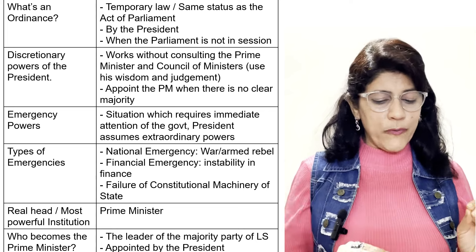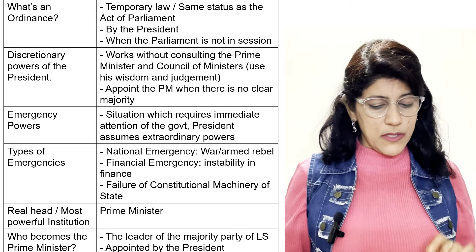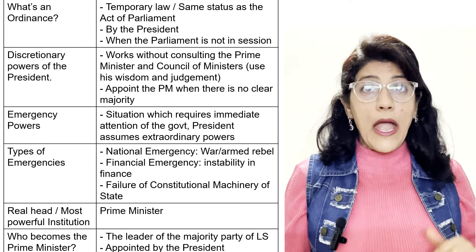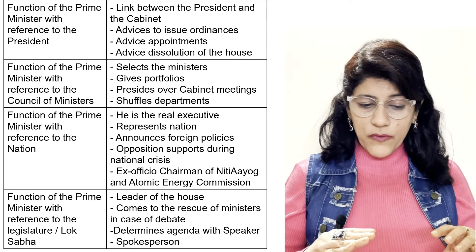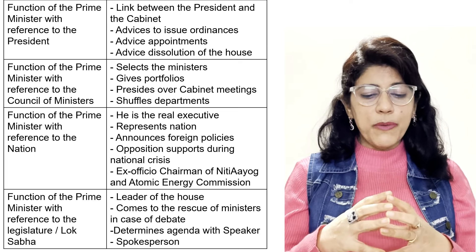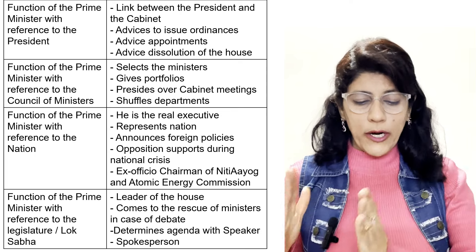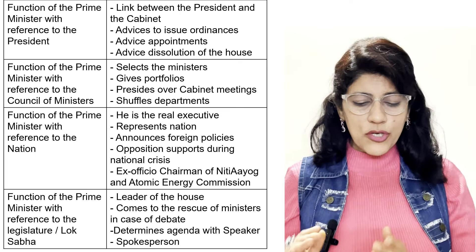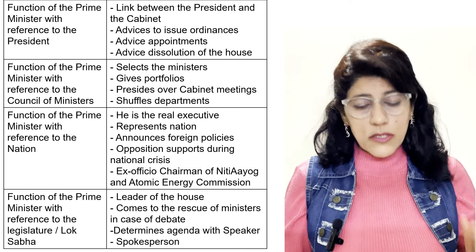The real head and most powerful institution is the Prime Minister. Who becomes the Prime Minister? The leader of the majority party of Lok Sabha, appointed by the President. Functions of the Prime Minister with reference to the President: link between the President and the cabinet, advises to issue ordinances, advises appointments, and advises dissolution of the house.